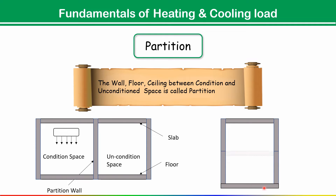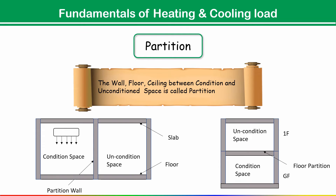Another example: suppose we have a ground floor that is conditioned and a first floor above that is unconditioned. The floor coming between the conditioned and unconditioned space is called a partition floor. Similarly, if a ceiling comes between conditioned and unconditioned space, it is called a ceiling partition.